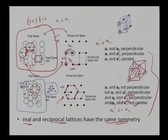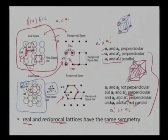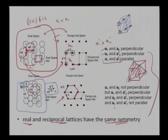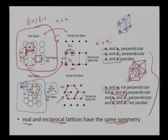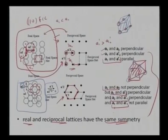I can show that in FCC 1 1 0: a₁ and a₂ are perpendicular, a₁ and a₂' are perpendicular, and a₁ and a₁' are parallel. But in the second case for 1 1 1: a₁ and a₂ are not perpendicular, but a₁ and a₂' are perpendicular, a₂ and a₁' are perpendicular, but a₁ and a₁' are not parallel. There can be certain complexities, but the reciprocal lattice retains the symmetry of the real lattice.